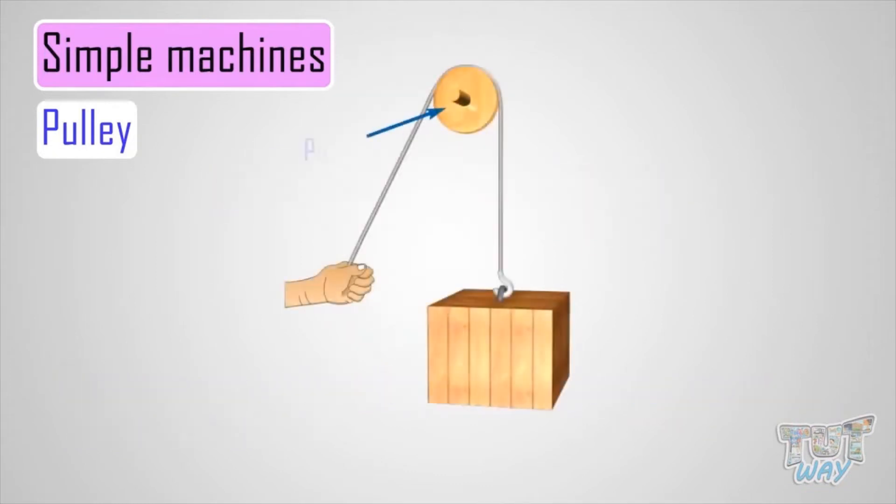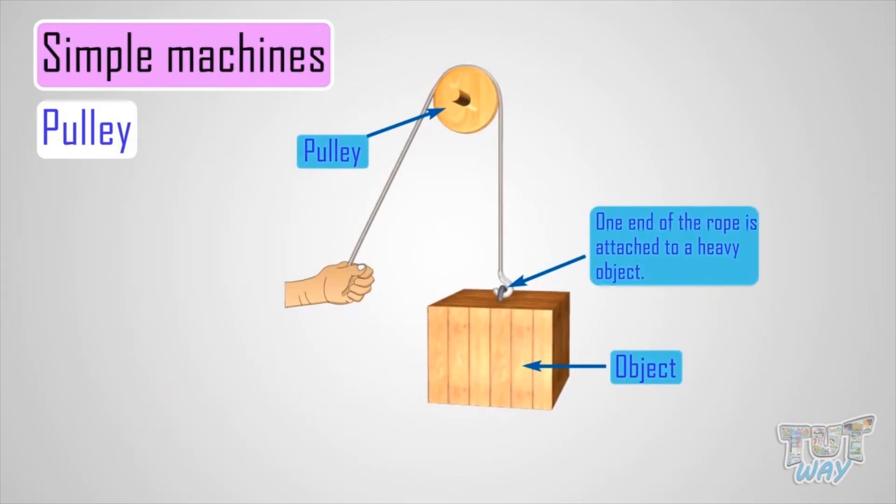One end of the rope is attached to a heavy object which we want to lift, and the other end of the rope is pulled through the system of pulley, like this.